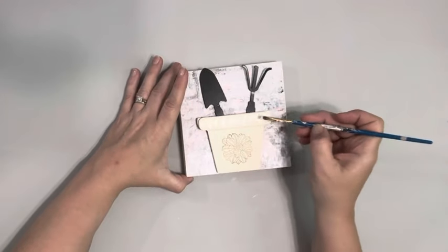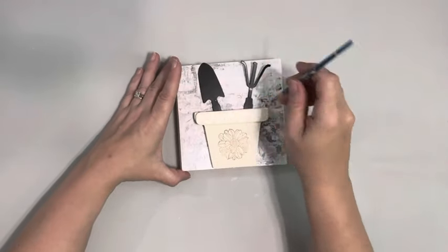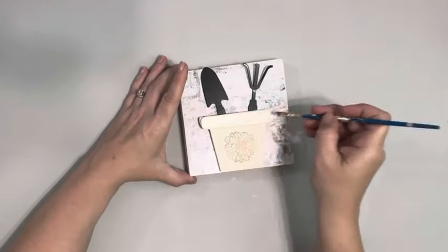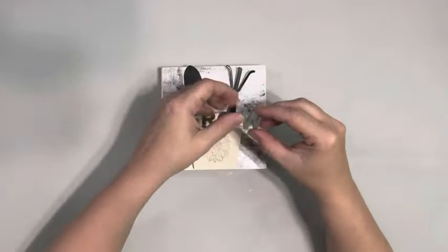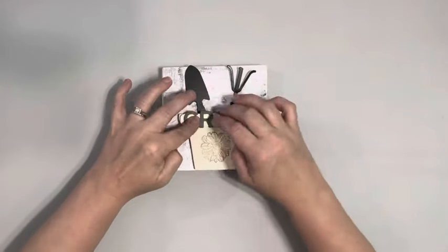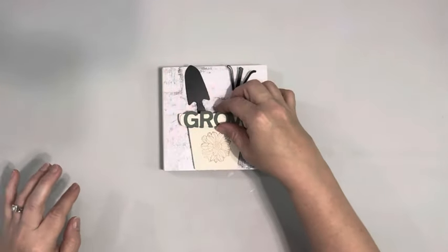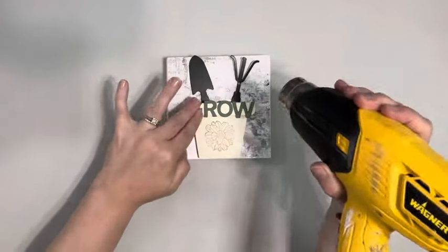To add the words on, I'm adding Mod Podge to the top part of the flower pot. While that's still wet, I place down these letters. Once the Mod Podge dries, those will stick to it. I just get them into place and push them into the Mod Podge, and use my heating tool to dry it.